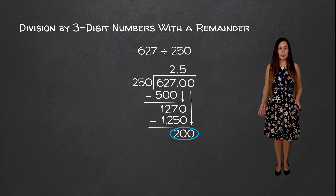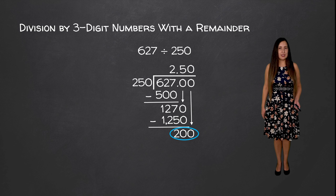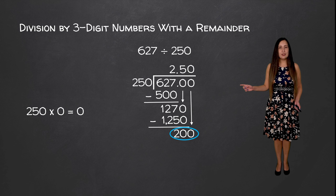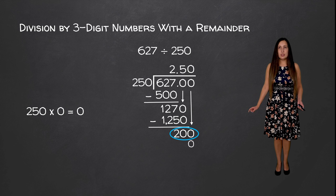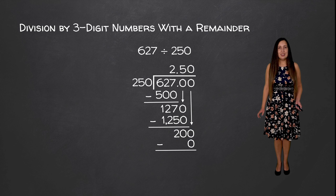250 times 0 is 0, and 250 times 1 is 250, which is too large. So we do have to write a 0 here, and 250 times 0 is equal to 0. We're going to write that value down here and subtract. 200 minus 0 is equal to 200.